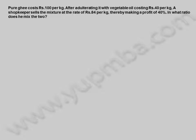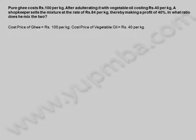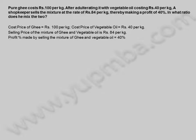Third example: Pure ghee costs 100 rupees per kilogram. After adulterating it with vegetable oil costing 40 rupees per kilogram, a shopkeeper sells the mixture at the rate of 84 rupees per kilogram, thereby making a profit of 40 percent. In what ratio does he mix the two? Cost price of ghee = 100 rupees/kg, cost price of vegetable oil = 40 rupees/kg, selling price = 84 rupees/kg, profit = 40%.